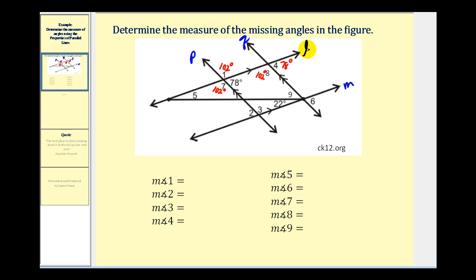Now let's look at the parallel lines L and M cut by transversal Q. Angle eight and these two angles here would be same-side interior angles, which must be supplementary. So one hundred two plus twenty-two plus angle nine must equal one hundred eighty degrees. One eighty minus one hundred two minus twenty-two gives us angle nine, which is fifty-six degrees.